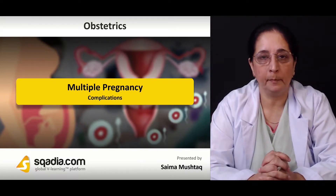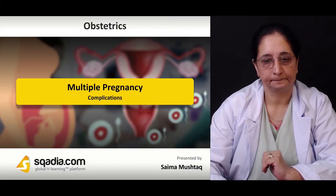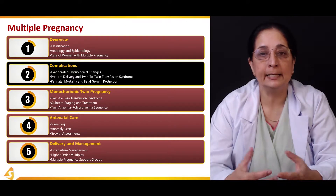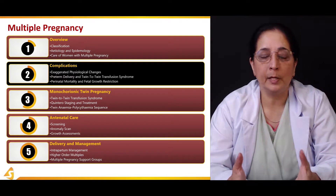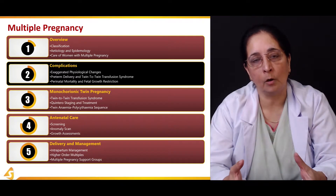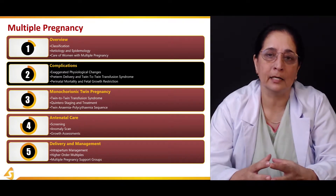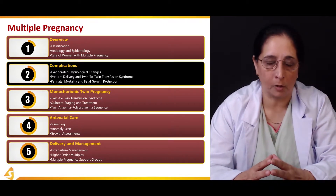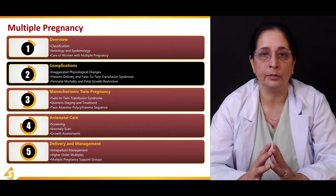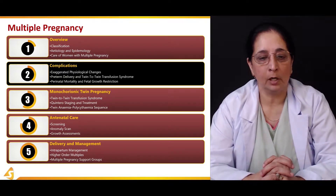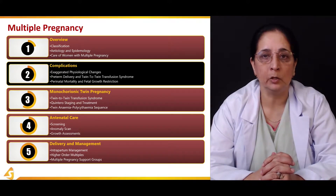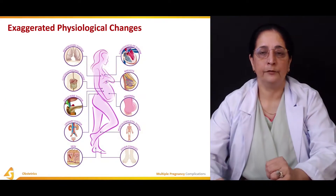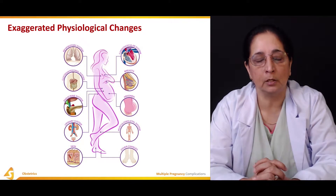In this second section we will talk about the complications of multiple pregnancy. We will also discuss the exaggerated physiological changes that can occur in twin pregnancy, since it differs from a single pregnancy. Then we will cover complications like preterm delivery, twin-to-twin transfusion syndrome, perinatal mortality, and fetal growth restriction.